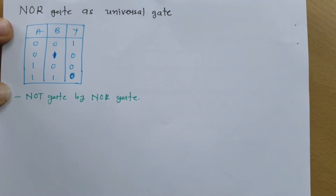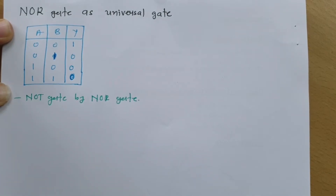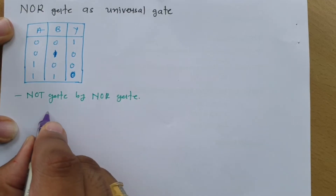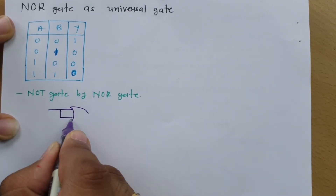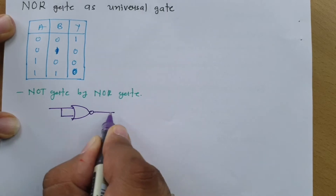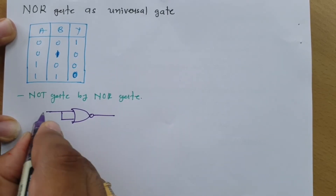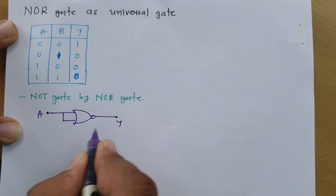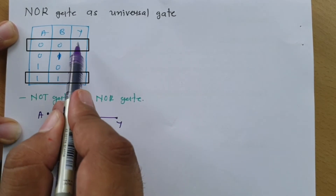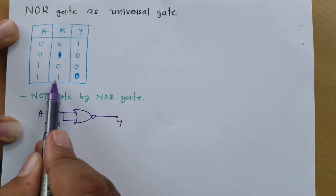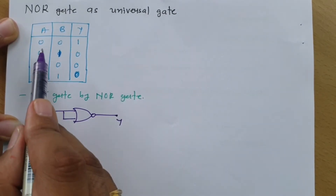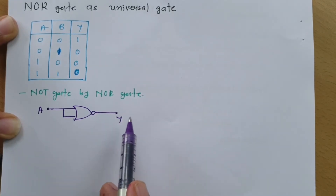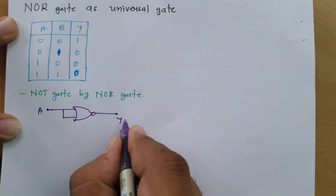To implement a NOT gate (inverter) by using NOR gate, all we need to do is short both input terminals. If you short the input terminals of a NOR gate, you get an inverter. So if my input is A and output is Y, for input 0 the output is 1, and for input 1 the output is 0. So by shorting both inputs, the output is A bar.